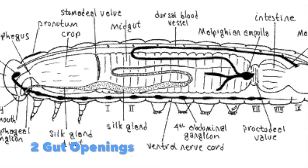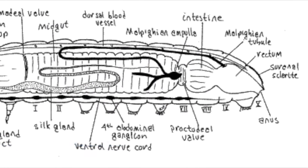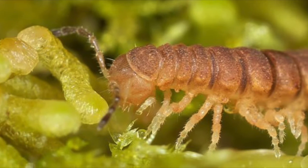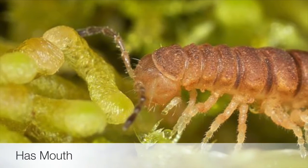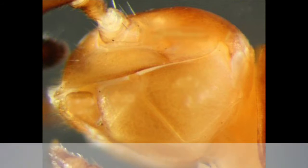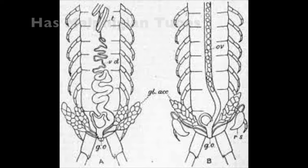Myriapods, like us, have two gut openings. The first is the mouth, where food is taken into the digestive system. From here, food goes into the Malpighian tubes, where it is digested, before being expelled into the hindgut for further processing.